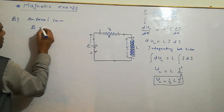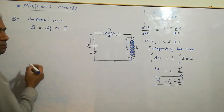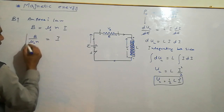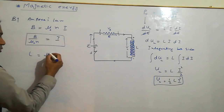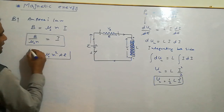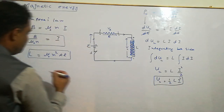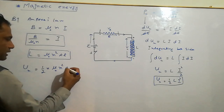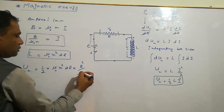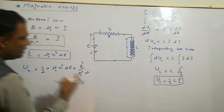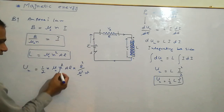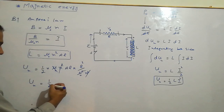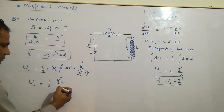By Ampere's law, B equals mu-naught times n times I, so I equals B over mu-naught n. Also, L equals mu-naught n squared times A times l. Substituting into Um equals one-half L I squared, we get Um equals one-half times mu-naught n squared A l times B squared over mu-naught squared n squared. The n squared and one mu-naught cancel, giving Um equals one-half times B squared over mu-naught times Al.